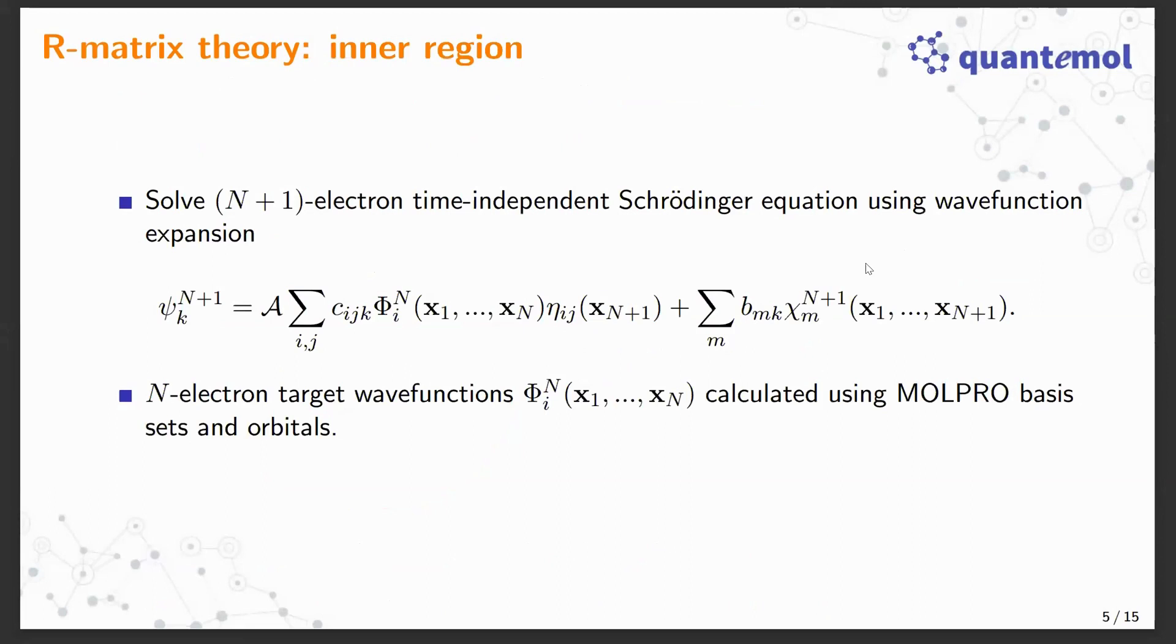Briefly through some of the inner region theory: in the inner region you're solving N+1 electron time-independent Schrödinger equation using a wave function expansion. The main thing to take from this expression are these functions Φ_i^N - these are the target wave functions which govern the positions of N electrons. For this talk, these are the essential things. These are provided by using MOLPRO basis sets and orbitals.